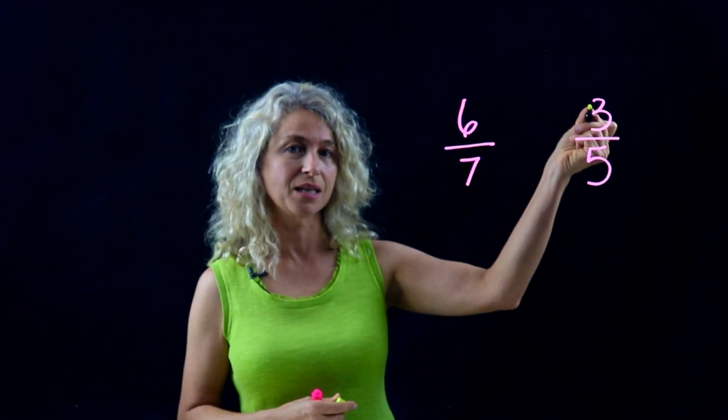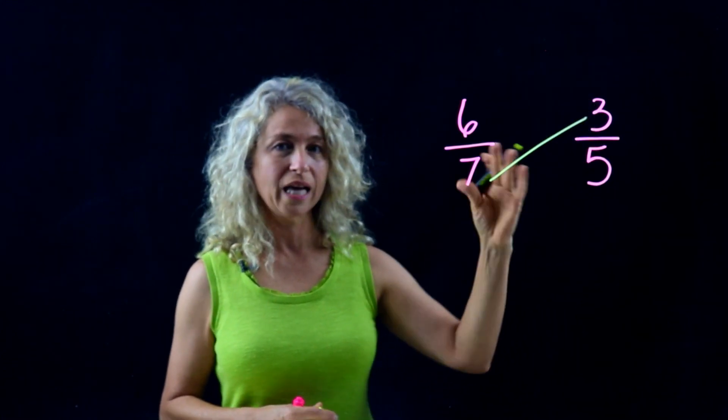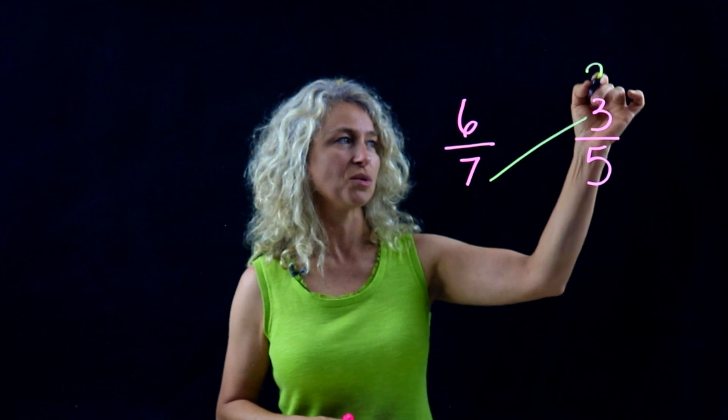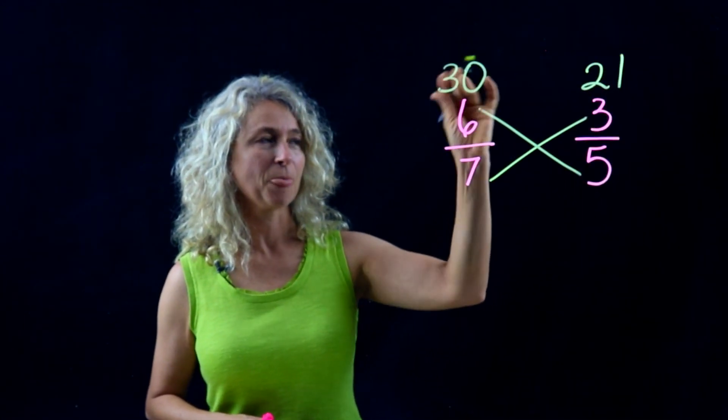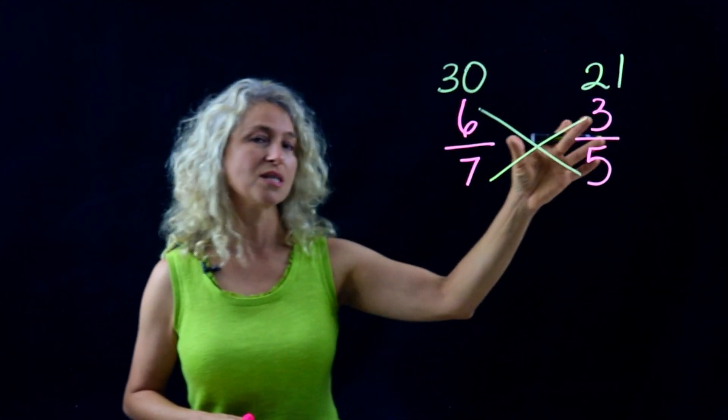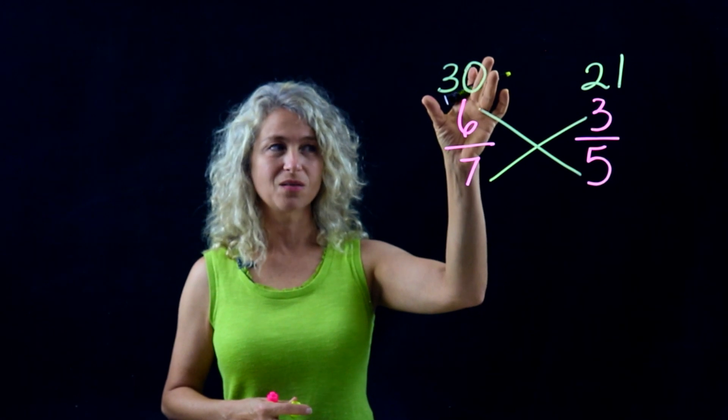Seven times three—you can draw the line if it helps you—seven times three is twenty-one. Five times six is thirty. Then compare the numbers. Which one's greater? Your thirty is greater, so six-sevenths is greater than three-fifths.